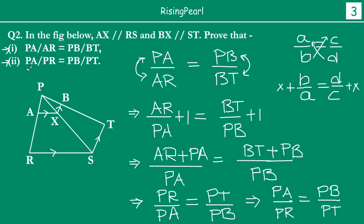This is exactly what we needed to prove. This is a special type of question where the ratios are not something you can find by directly applying theorems 2 and 3, because instead of having PA by AR, we have PA by PR. Whenever you have this kind of question, you start with PA by AR and then add one so that you are adding the two lengths to get the entire length PR. The whole point of adding one was to reach this step.